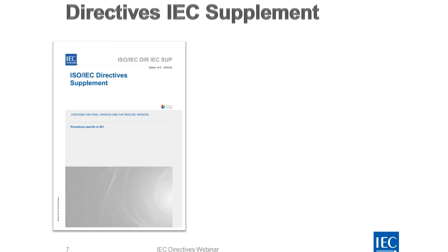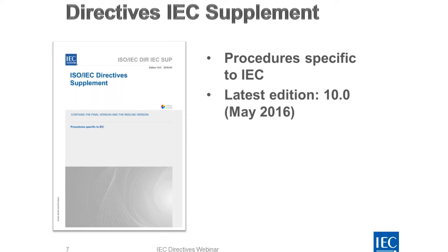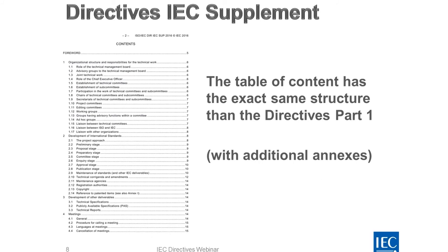Now let's go into more detail on the IEC supplement. The IEC supplement details all procedures specific to IEC. The latest edition is Edition 10, also published last year in May, and it also includes the redline version. The table of contents of the IEC supplement has the exact same structure as Directives Part 1 — the same number of clauses with the same clause titles. You will find clauses 1, organizational structure 1.1, role of technical management board and so on. The only difference is that there are some additional annexes.